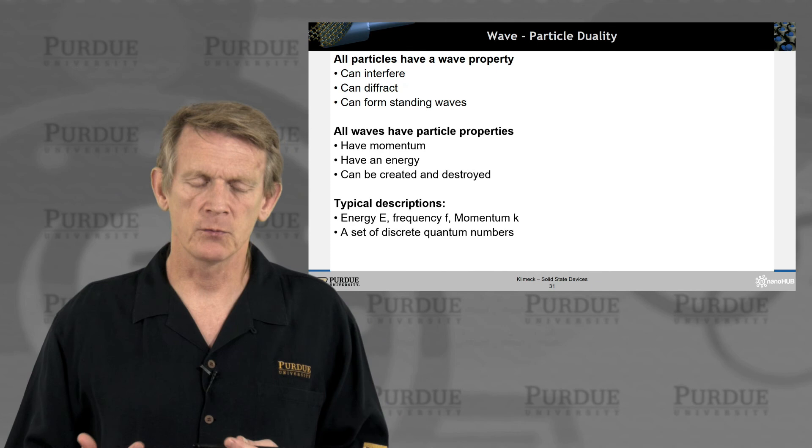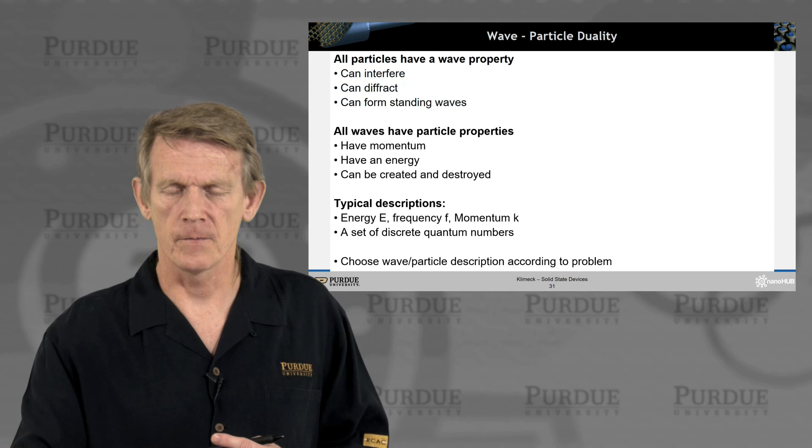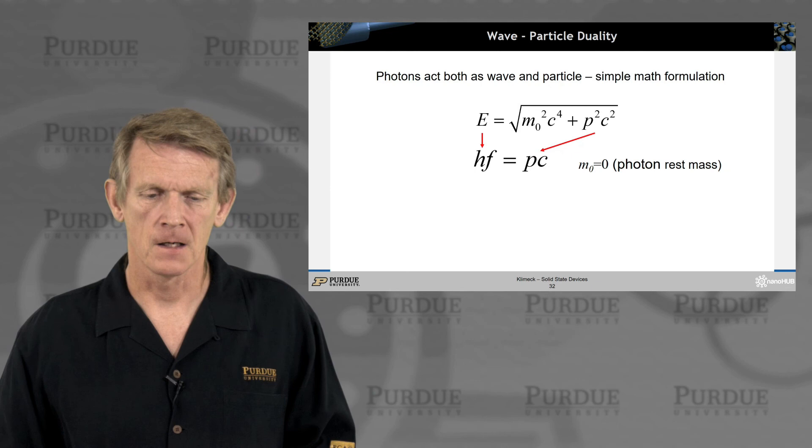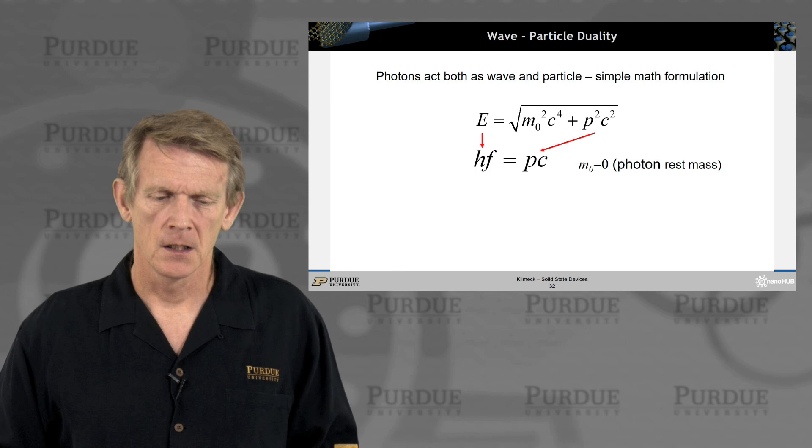So typically, you have energy, frequency, and momentum that describe these waves and particles, and you have discrete numbers that are quantum numbers. And again, you choose what you model, wave or particle, depending on the problem that you try to describe.